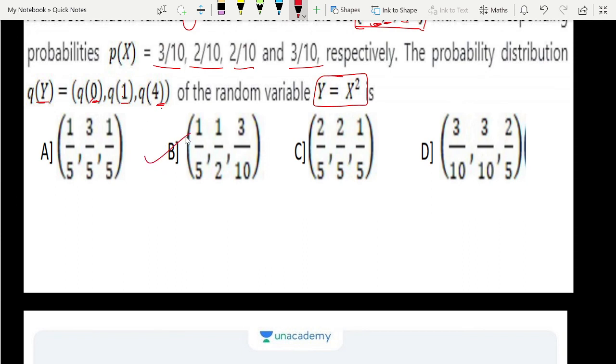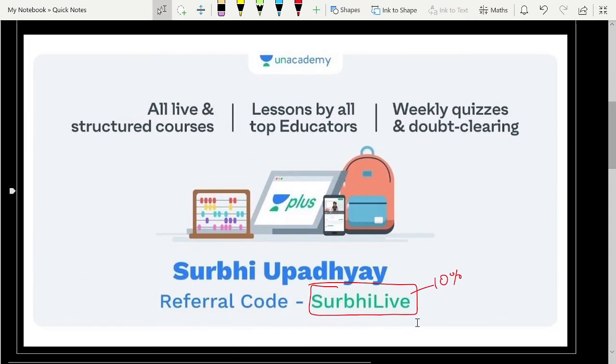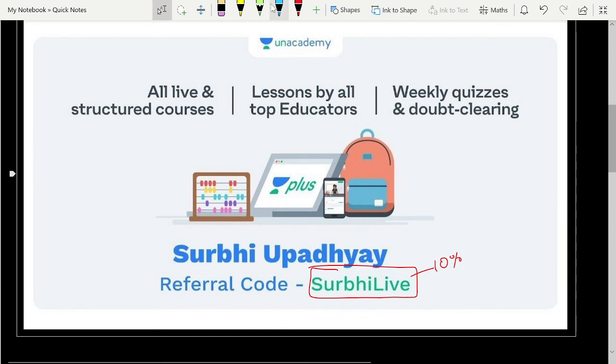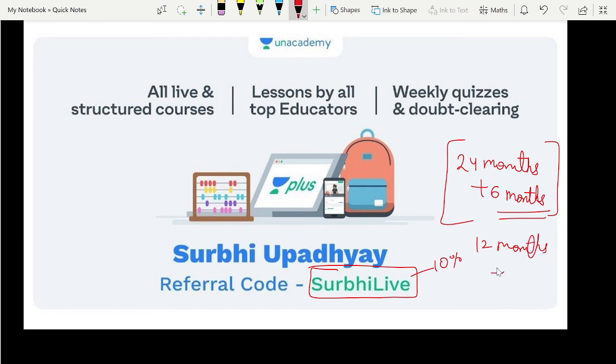Thank you everyone. If your friends want to subscribe, you can share the code SurbhiLive with them. Also, you can tell them about an important offer on Unacademy: if you subscribe for 24 months, you get 6 months additional free, saving 43%. For 12 months subscription, you get 3 months free. So go for this and use the code SurbhiLive. Thank you everyone, please like, subscribe, and share the video with your friends.